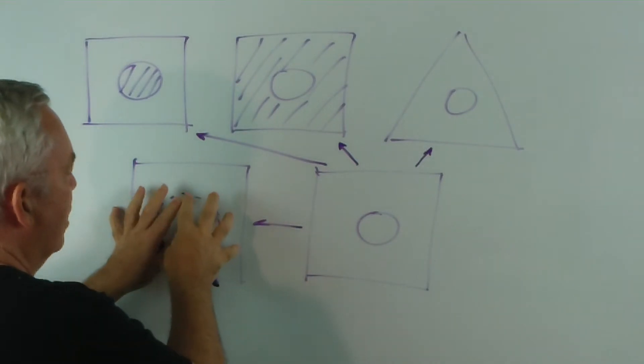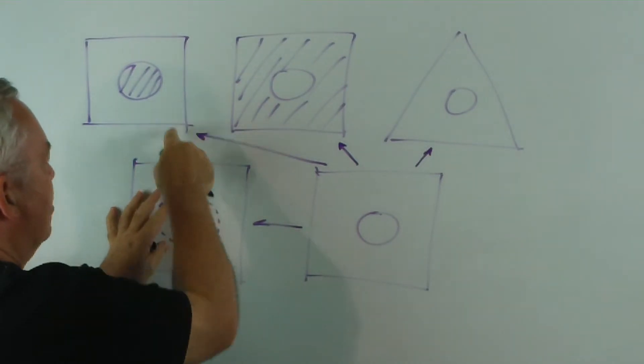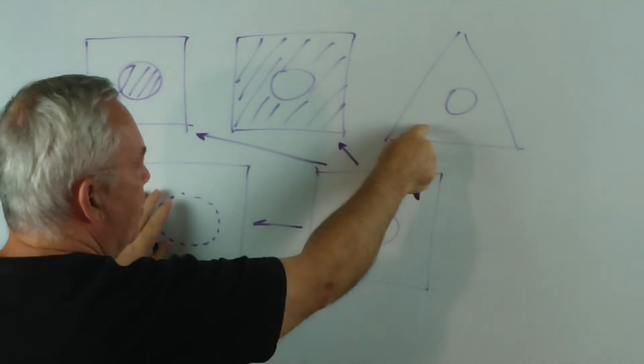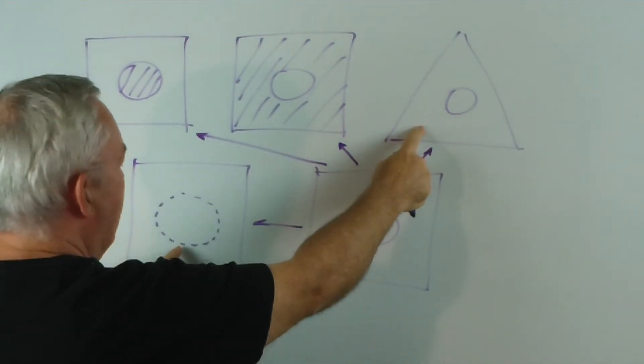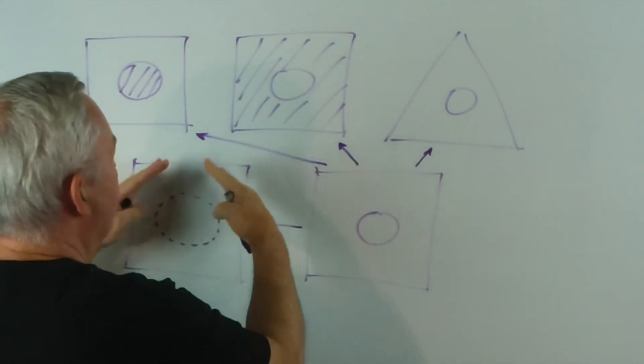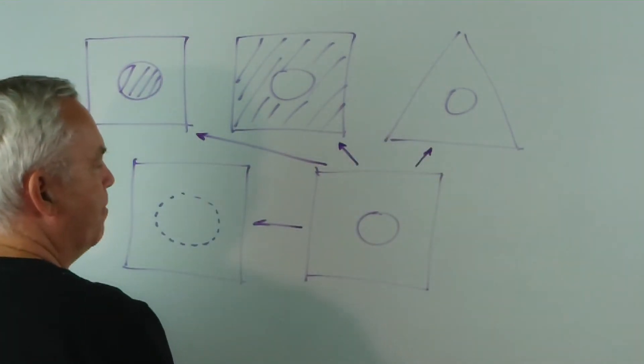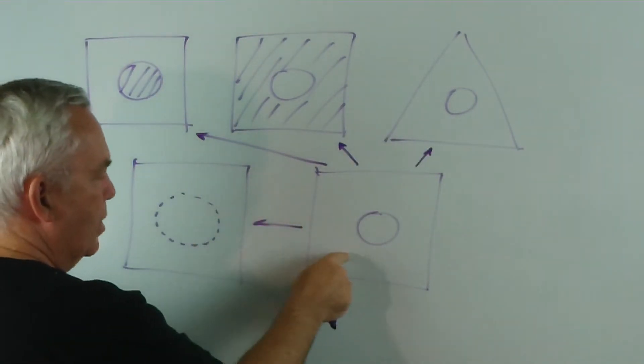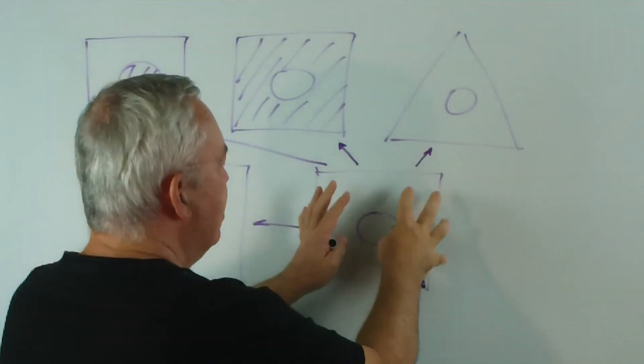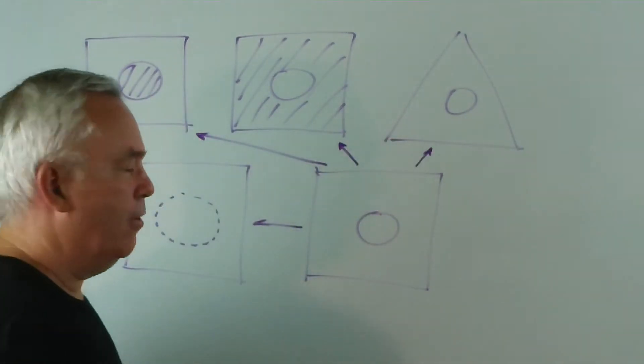If I start with any of the others, I actually have to make two steps. Two changes to get here. Here I have to make the circle solid and change the outside to a triangle. Of course, it's only one step back to this one. But this is the basic pattern that all the others are derived from.